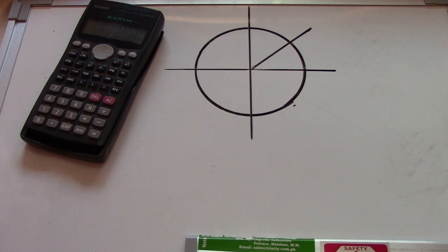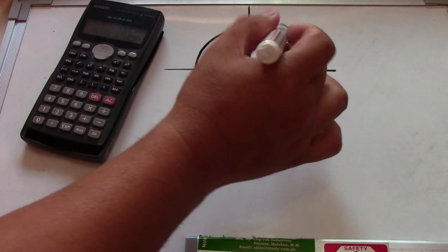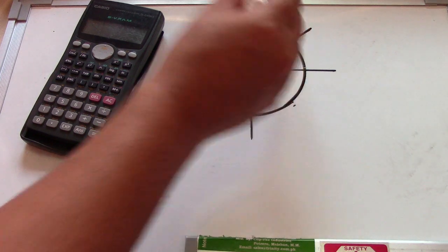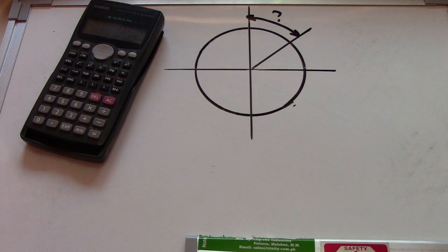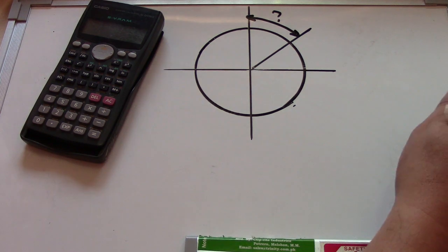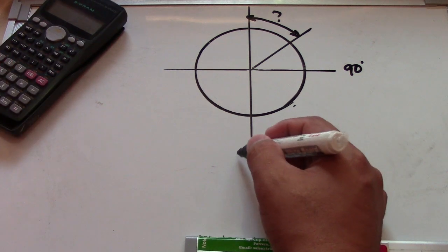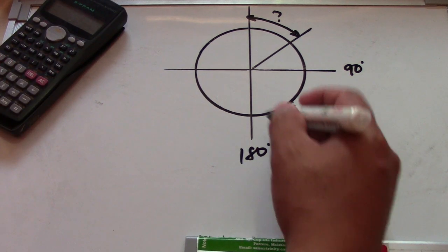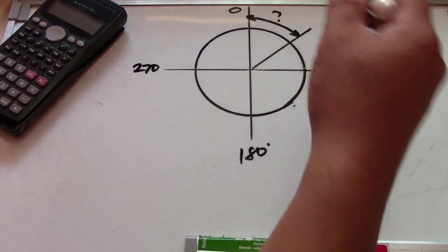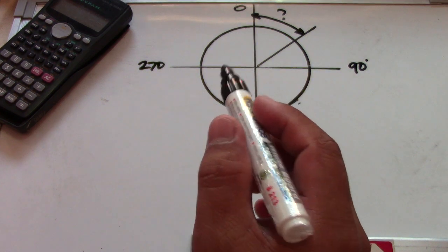So we have a circle here, and from this circle we will find the arc length. This is the question. From this circle we have 90 degrees, 180 degrees, 270 degrees, and zero degrees.